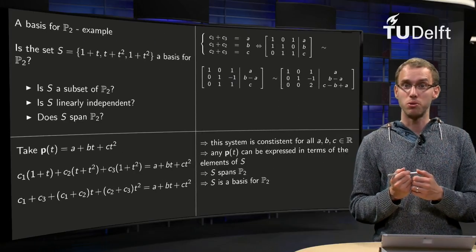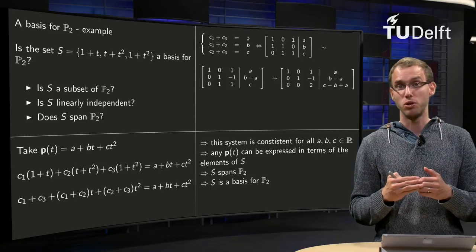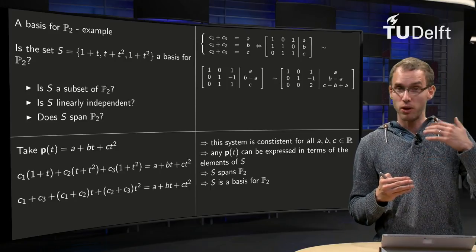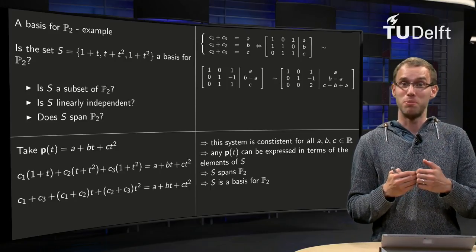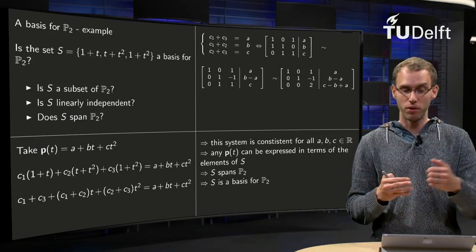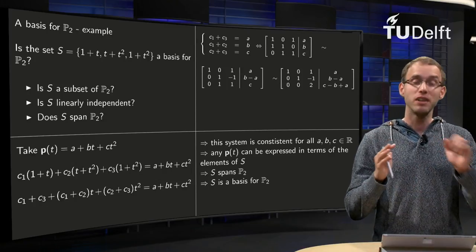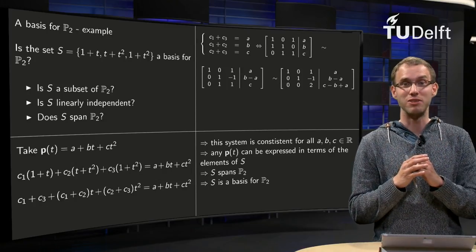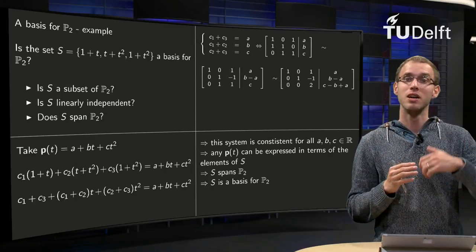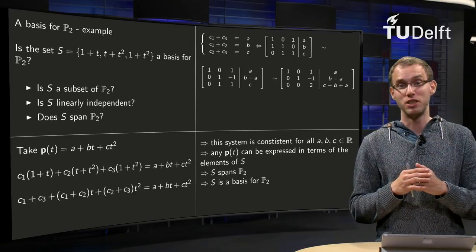So you know that this is consistent, regardless of the choices a, b, c in R. So any p of t can be expressed in terms of your v₁, v₂, and v₃. So that means that S spans P₂. That was the last condition we had to check, it is also satisfied. So S is a basis of P₂.